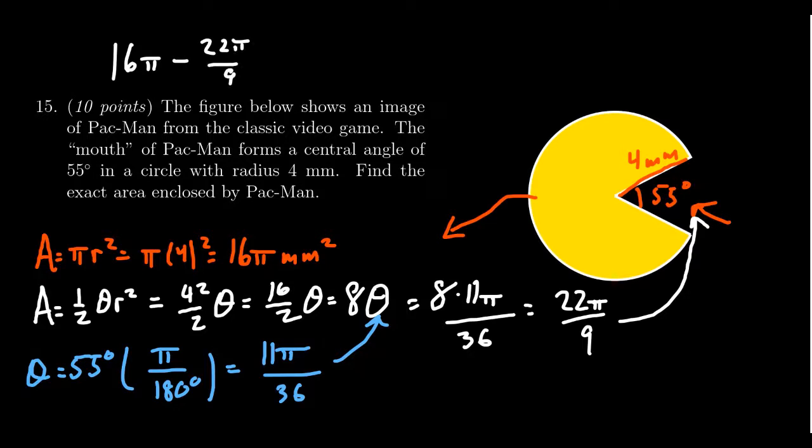I'm going to take 16 times nine, which is 144, so that I have a common denominator over nine. Then 144 take away 22, that's 122 pi over nine.